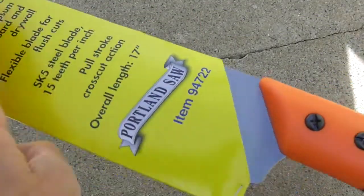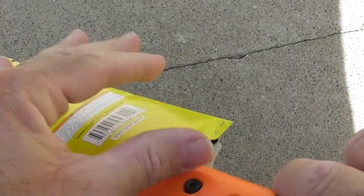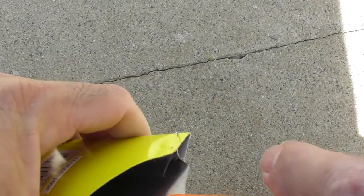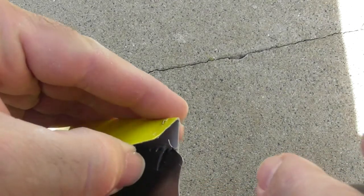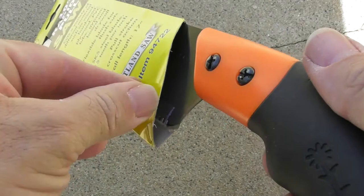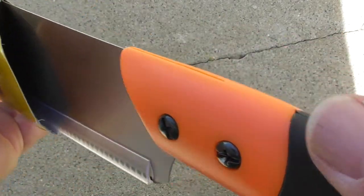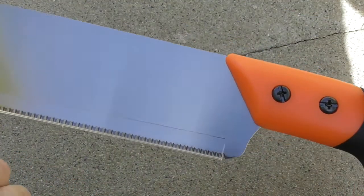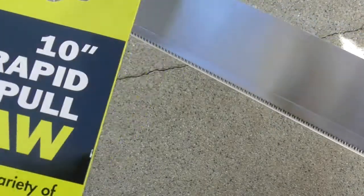I've never owned a pull saw. It cuts on the pull instead of the push. So we're just going to do a real quick review, test and see how it works. It comes with a protective cover, 10 inches long.